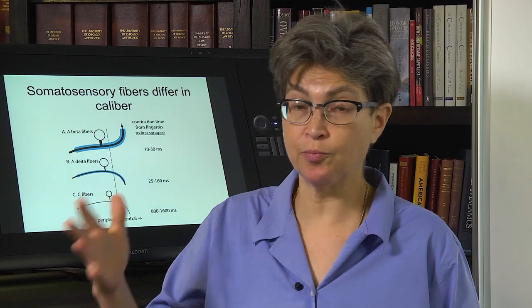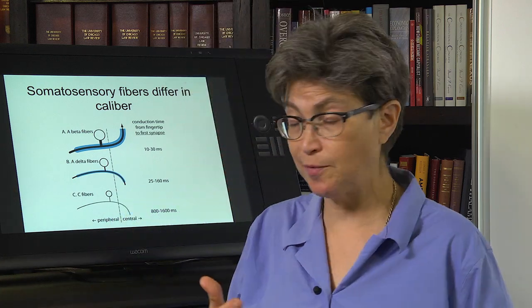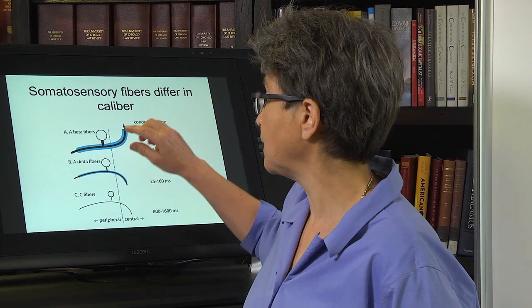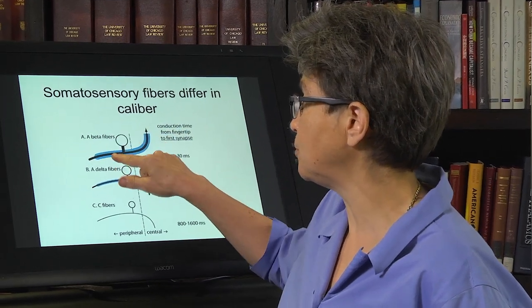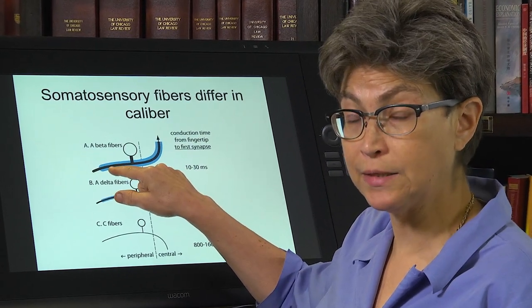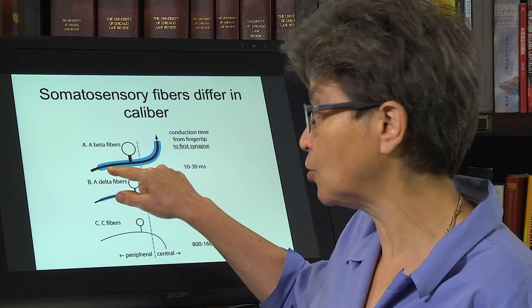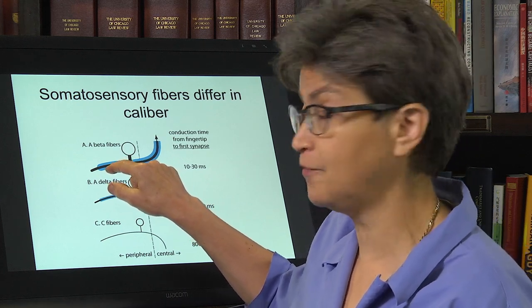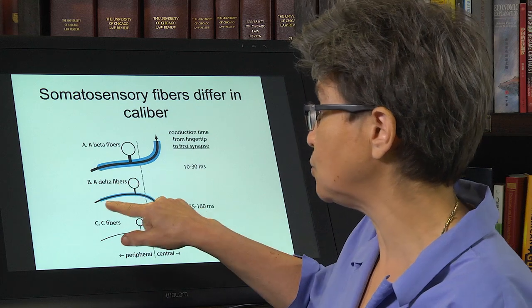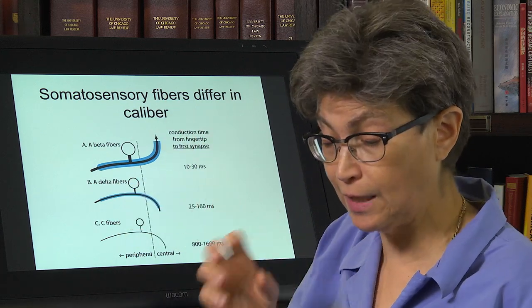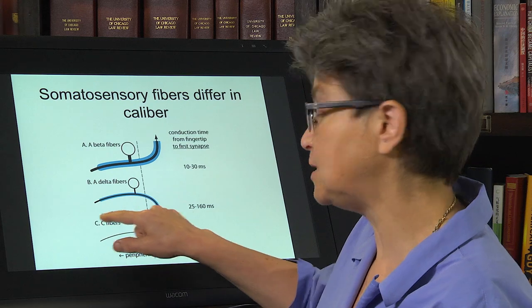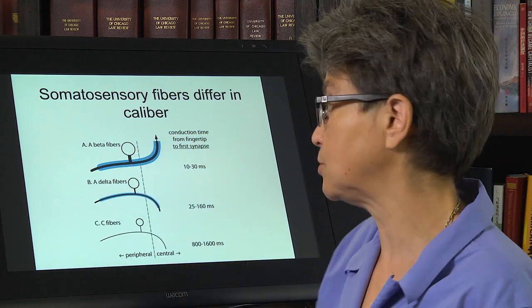We start out in the periphery, as we always do, and there are three types of fibers, roughly speaking, that we have to talk about. The A-beta fibers, which are wide-diameter, well-myelinated fibers; A-delta fibers, which are thinner and lightly myelinated; and then C-fibers, which are unmyelinated fibers.